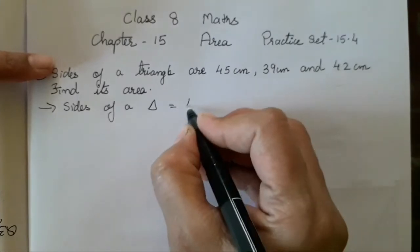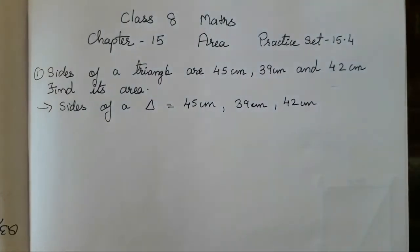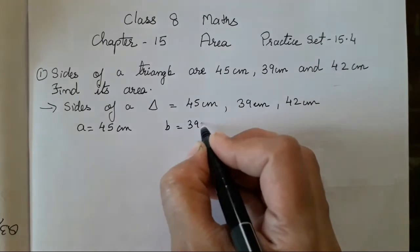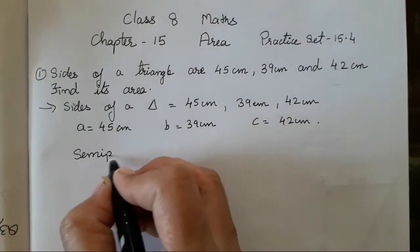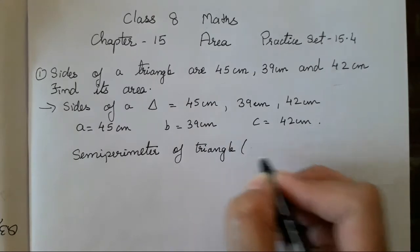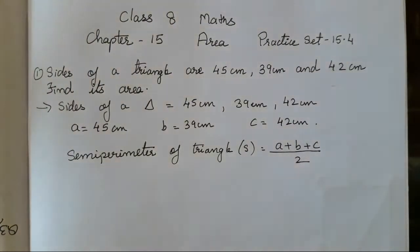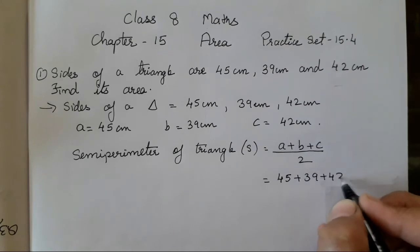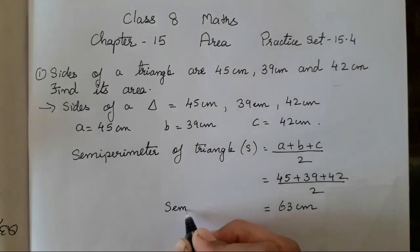Sides of a triangle: a = 45 cm, b = 39 cm, and c = 42 cm. Now the semi-perimeter of the triangle: s = (a + b + c) / 2. We are finding the semi-perimeter — we add all the sides given to us and then divide by 2. The answer is going to be 63 cm, which is our semi-perimeter, or s.